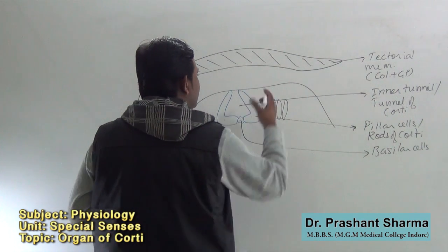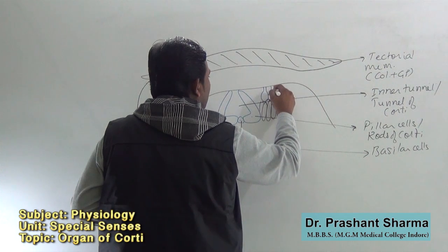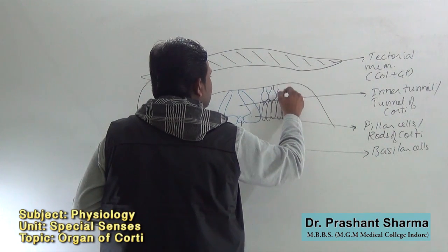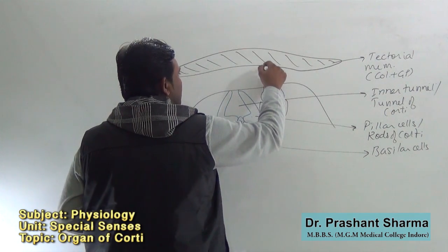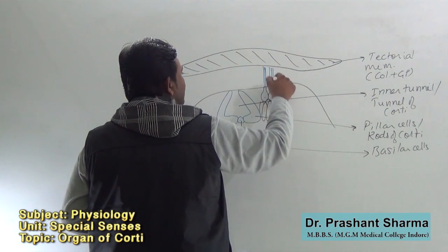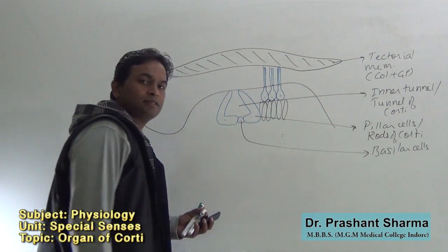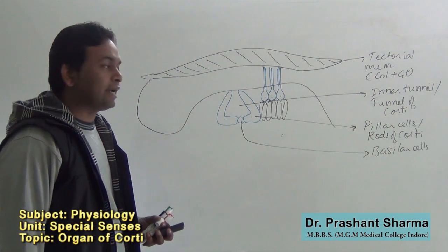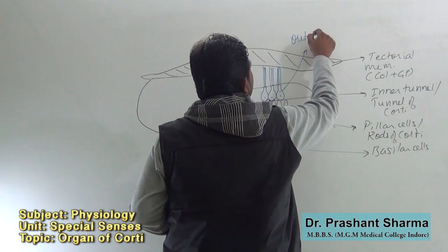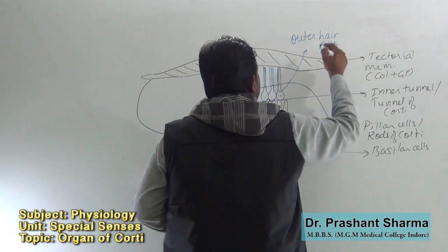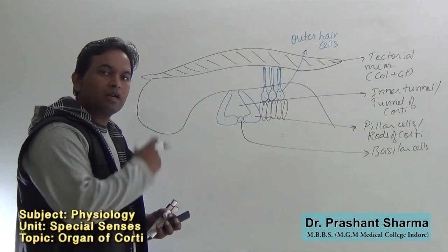These outer phalangeal cells provide a base for the outer hair cells. These are outer hair cells, and stereocilia originating from these hair cells are embedded in the tectorial membrane. These outer hair cells are about twenty thousand in number and are arranged in three rows.